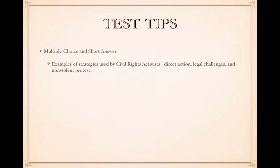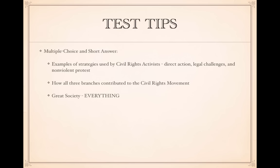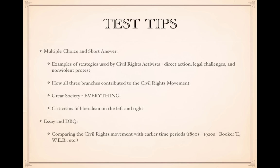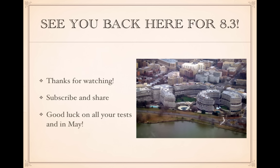For test tips on multiple choice and short answer: know examples of strategies used by civil rights activists — direct action, legal action, and non-violent protest — and how all three branches contributed to the civil rights movement. Know everything about the Great Society. Know criticisms of liberalism from both the left and the right. For essays and DBQs, compare and contrast the civil rights movement with earlier periods — the 1890s to 1920s with Booker T. Washington, W.E.B. Du Bois, and Marcus Garvey — and compare the women's rights movement with the Seneca Falls Convention of the 1840s or flappers of the 1920s. See you for Key Concept 8.3!